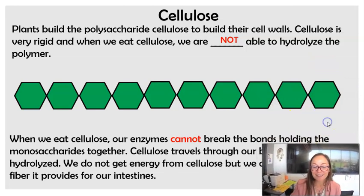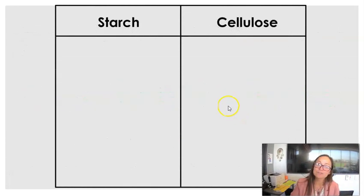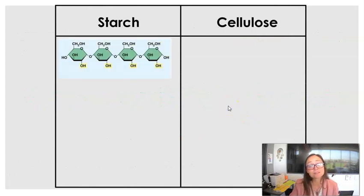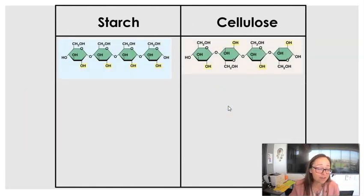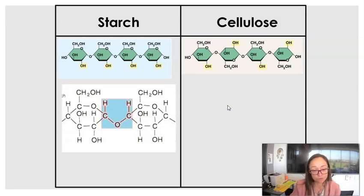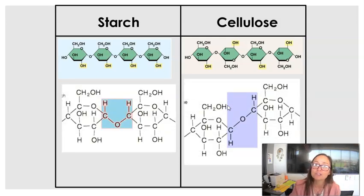So let's go ahead and see again. So starch versus cellulose. Starch is made of a chain of alpha-glucose monomers or alpha-glucose monosaccharides. And then cellulose is made of a chain of beta-glucose monosaccharides. And this changes the bonds between the monomers. Starch, we're able to hydrolyze, whereas cellulose, we are not able to break apart or digest or hydrolyze.